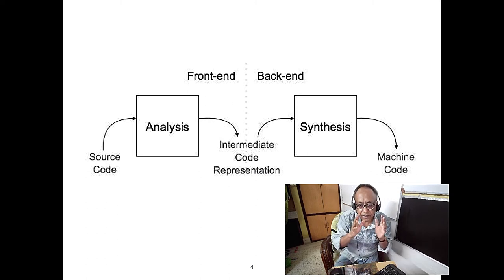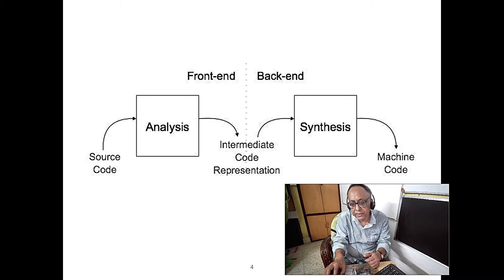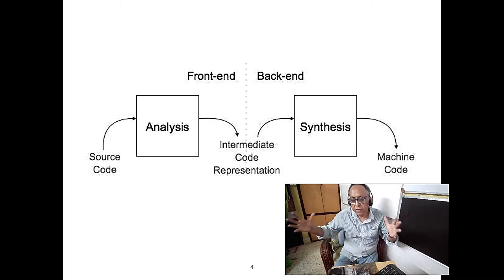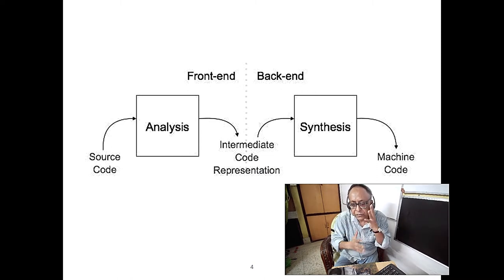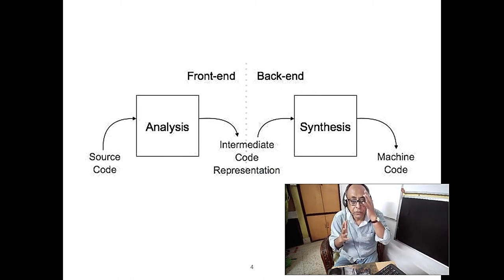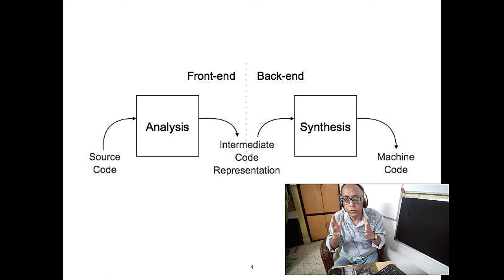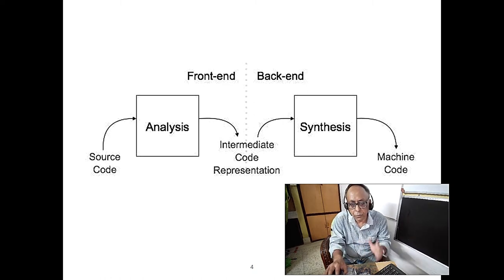From intermediate code generation to synthesis, we make compact optimized code. Lots of artificial intelligence techniques are used so that the code is intelligent and bug-free. That is the synthesis portion. Both portions are important.